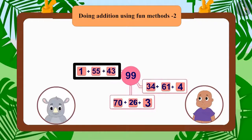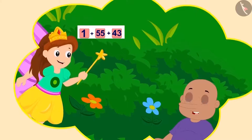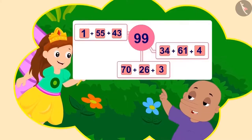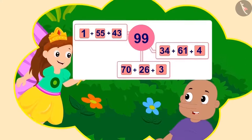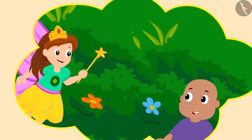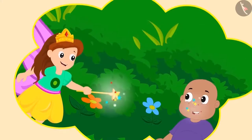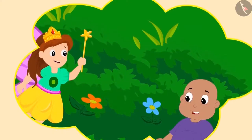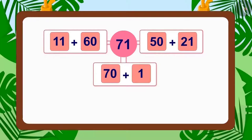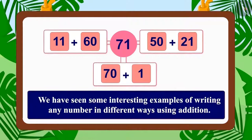At night, Bablu showed Gaggu's answer to the angel. Gaggu's answers were correct. The angel fixed Bablu's nose perfectly. Bablu promised never to do mischiefs again. Children, in this lesson we have seen some interesting examples of writing any number in different ways using addition.